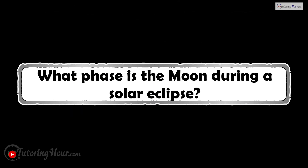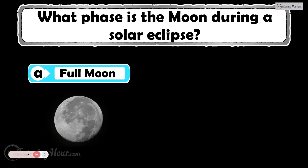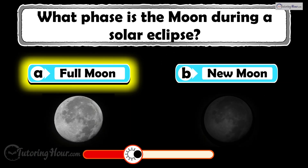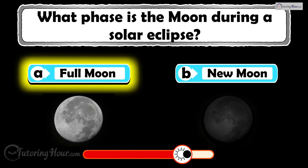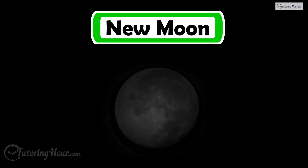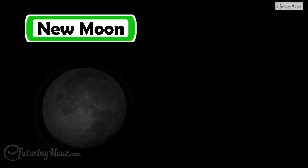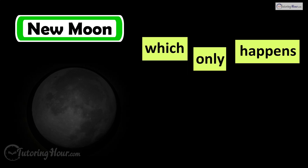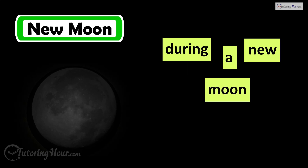What phase is the moon during a solar eclipse? Is it A, full moon, or B, new moon? The correct answer is new moon. The moon must be between Earth and sun, which only happens during a new moon.